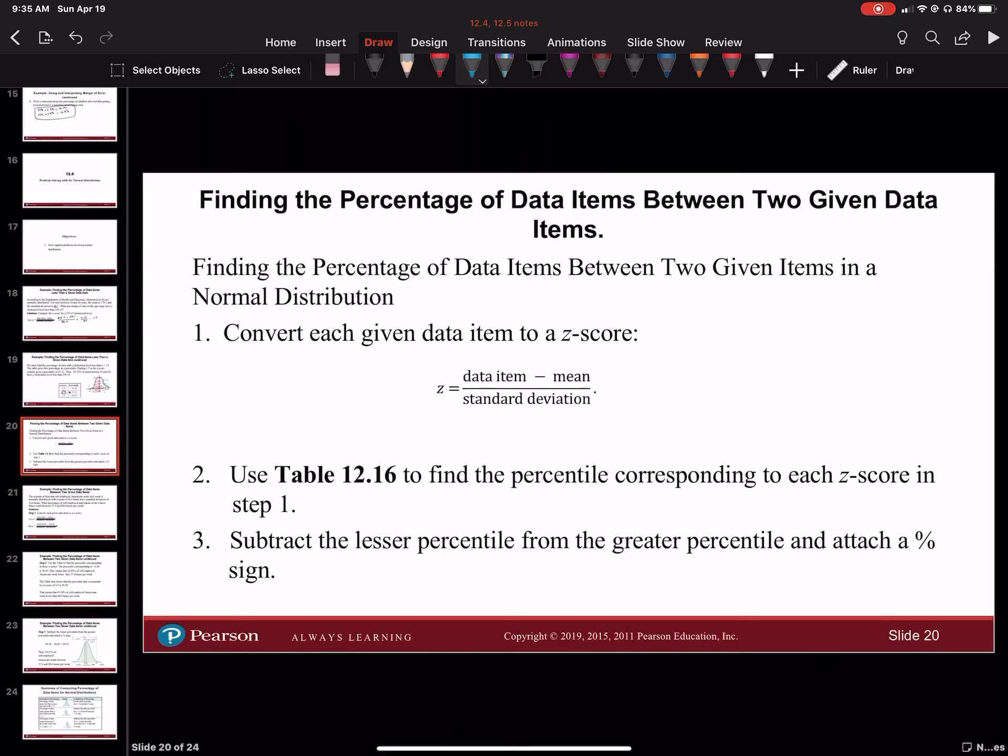Use table 12.16 in your book to find the percentiles corresponding to each z-score. Subtract the lesser percentile from the greater percentile and attach a percent sign. Basically you're going through the process of finding these things, then you take the difference.